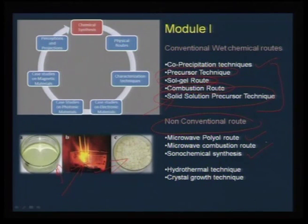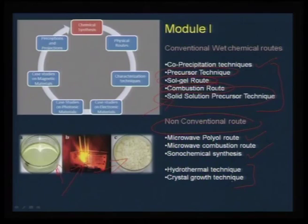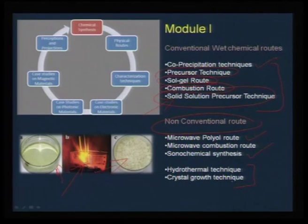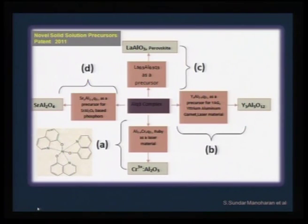The non-conventional routes are not the normal chemical routes, but are wet chemical routes using electromagnetic radiation to synthesize materials with novel properties. We also have two special techniques — hydrothermal and crystal growth. Crystal growth is an art in itself, and hydrothermal synthesis emphasizes the use of pressure to stabilize metastable phases. Let me highlight a few examples to give you an idea of what these techniques involve.